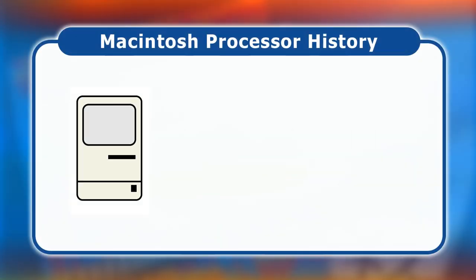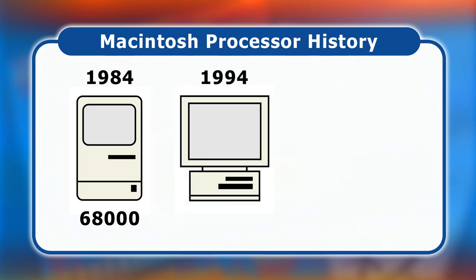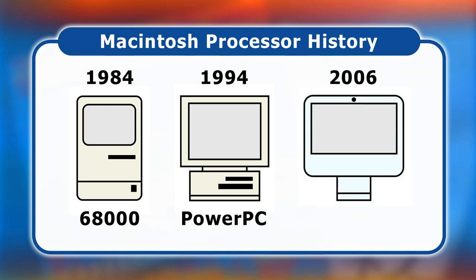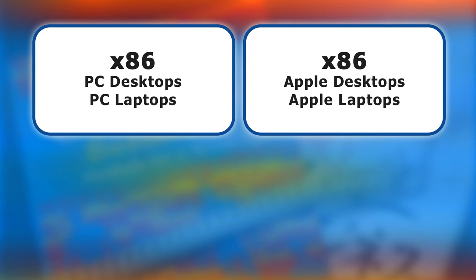When Apple launched its first Macintosh in 1984, it was based on a microprocessor called the 68000, designed and manufactured by Motorola. For nearly a decade Macs were based on processors with a 68000 instruction set. In 1994 Apple switched to a new series called PowerPC, developed by an alliance of Apple, IBM, and Motorola, based on RISC technology. PowerPC processors were used in Apple desktops and laptops until 2006, after which the company transitioned to x86 chips from Intel.